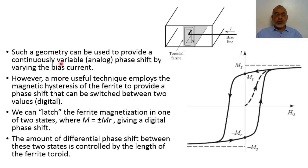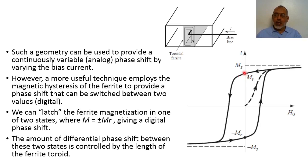Such geometry can be used to provide a continuously variable or analog phase shifter by varying the bias current. However, a more useful technique employs the magnetic hysteresis of the ferrite to provide a phase shifter that can be switched between two values — making it digital rather than analog. We can latch the ferrite magnetization in one of two states: M equals positive or negative remnant magnetization MR, giving digital phase shifts. The amount of differential phase shift between these two states is controlled by the length of the ferrite toroid, since the phase shift equals beta-plus or beta-minus multiplied by the length L.